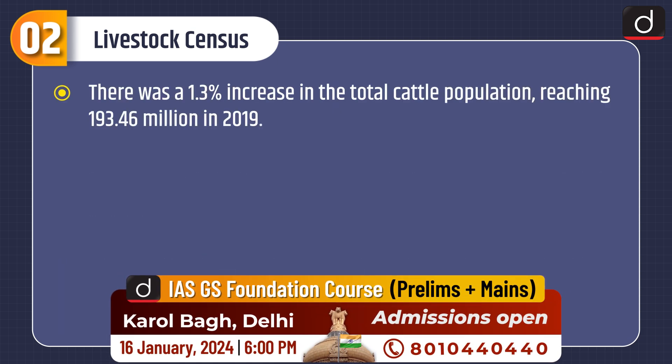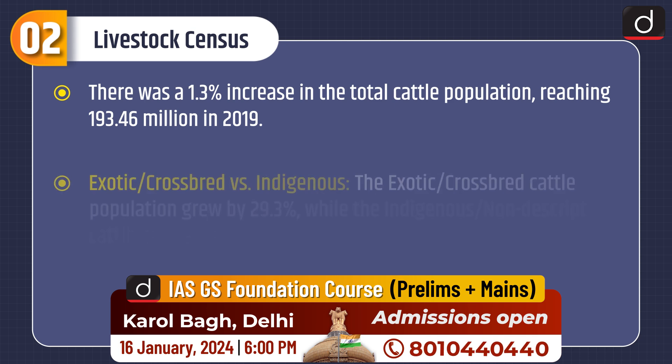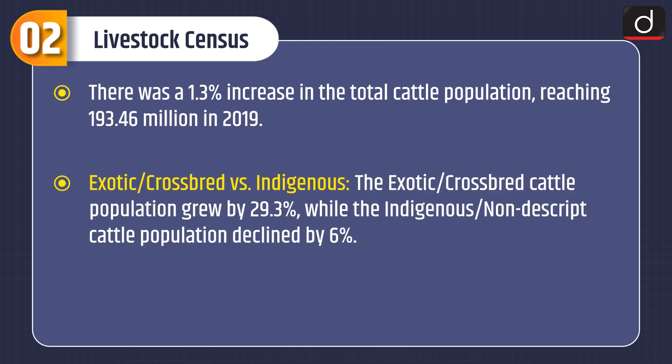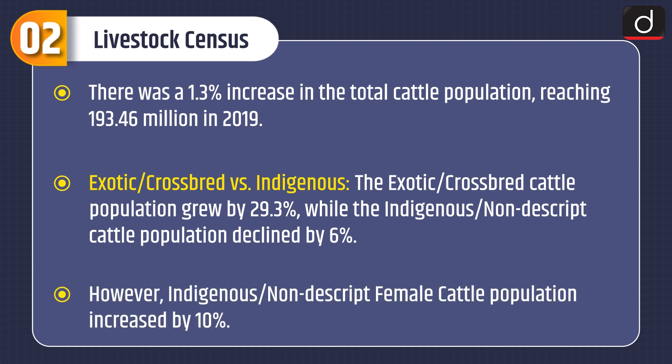There was a 1.3% increase in the total cattle population, reaching 193.46 million in 2019. The exotic crossbred cattle population grew by 29.3%, while the indigenous or nondescript cattle population declined by 6%. However, the indigenous or nondescript female cattle population increased by 10%.